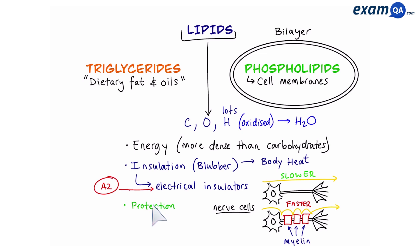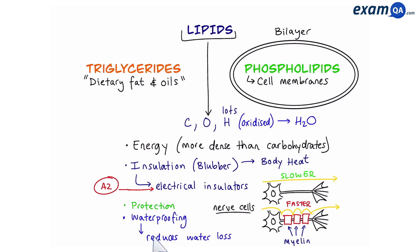The other job of lipids is to protect our organs. Most of our organs are surrounded by a layer of fat, and this helps to protect them against mechanical stress. And finally, waterproofing — this helps to reduce water loss in organisms. For example, plants have a layer of waxy cuticle above their leaves, and this helps to reduce water loss. This fatty layer is also found on insects, and it has the same purpose: to reduce the loss of water.